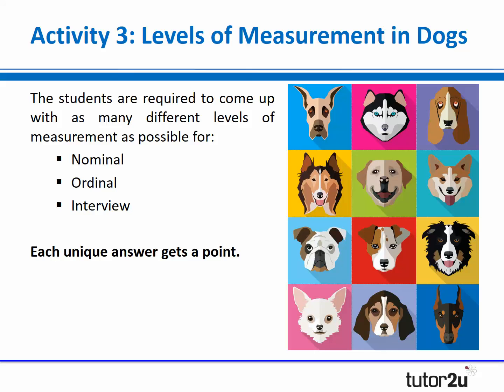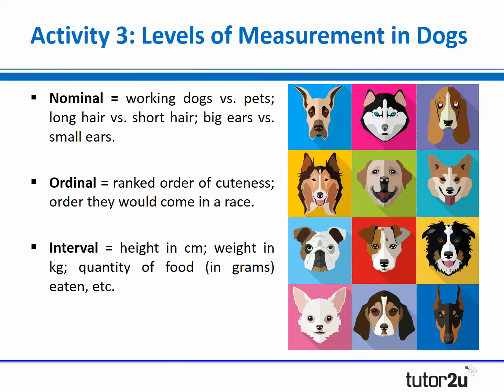You'll probably want to do this in steps. Say: right, nominal first - come up with as many different categories as you can for the pictures of dogs. As students come up with categories, get them to write on a mini whiteboard, and every unique category a group comes up with earns that group a point. For nominal, they could do things like working dogs versus pet dogs, long-haired versus short-haired, big ears versus small ears. For ordinal, they might rank in order of cuteness or the order they might come in a race. And for interval, they might say height in centimetres, weight in kilograms, quantity of food consumed in grams. It's a fun competitive-based activity to make sure they're really thinking about these different levels of measurement.